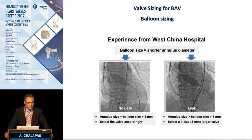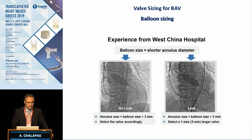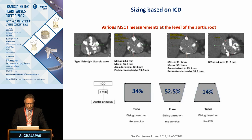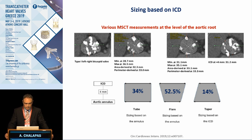According to a recently published paper, using the balloon is very important for the sizing process in cases with bicuspid valve. Here is a nice algorithm based on experience from Asia. We know that Asian populations are characterized by a higher incidence of bicuspid valve. Another important piece of information from CT analysis is the dimensions of the intercommissural diameter 4 mm above the level of the annulus.